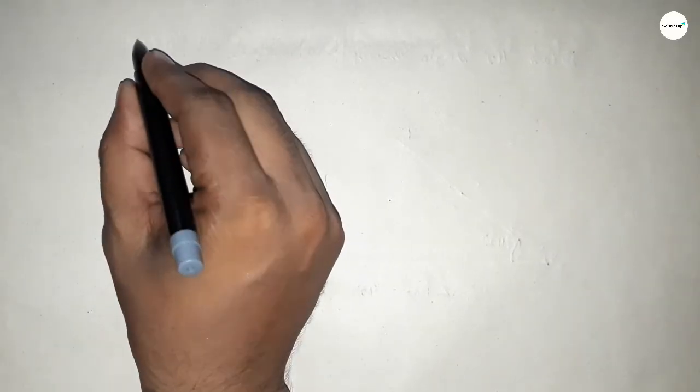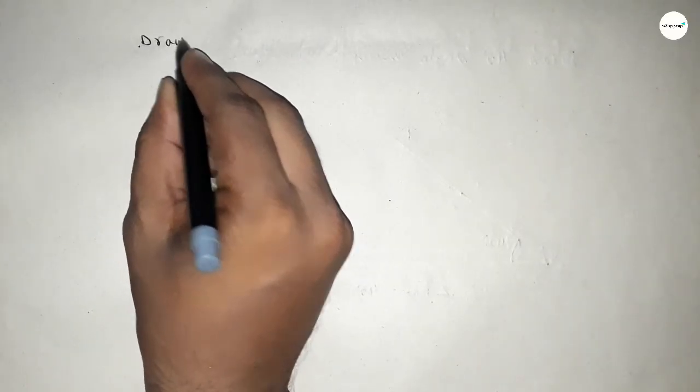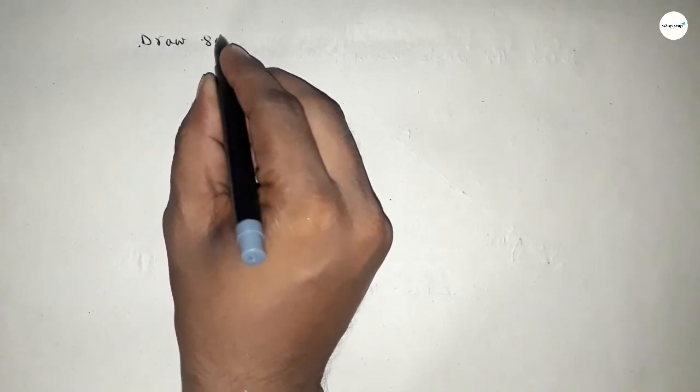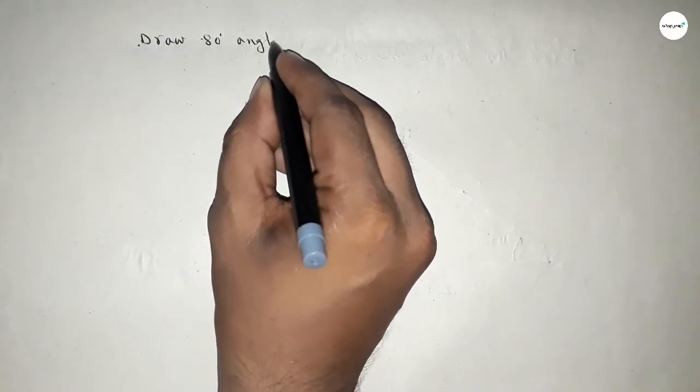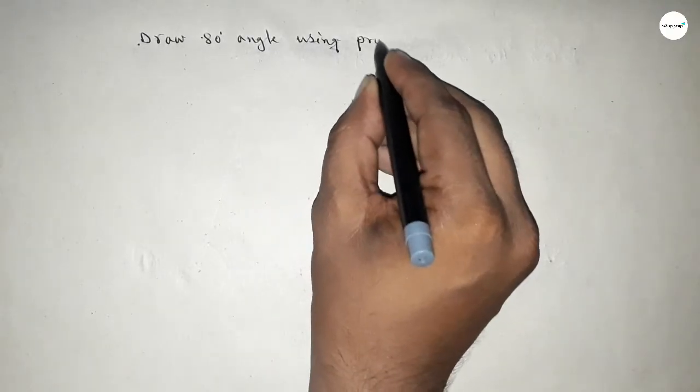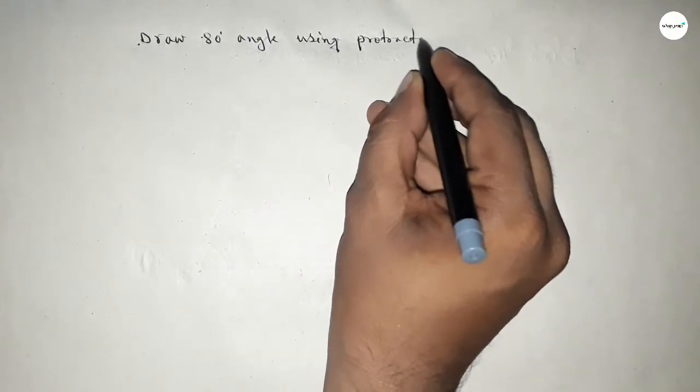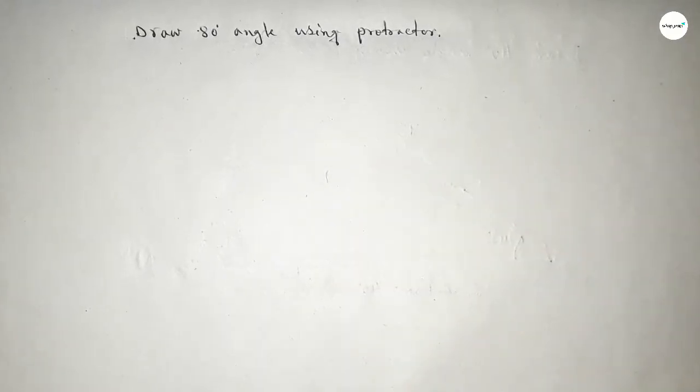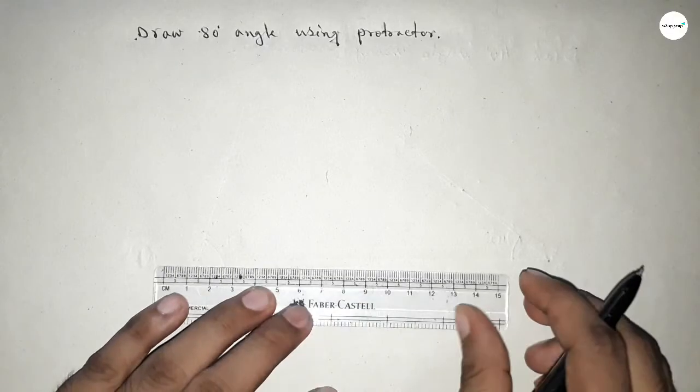Hi everyone, welcome to SSJR classes. Today in this video we have to draw an 80 degree angle by using a protractor. So, constructing an 80 degree angle by using a protractor, let's start the video.